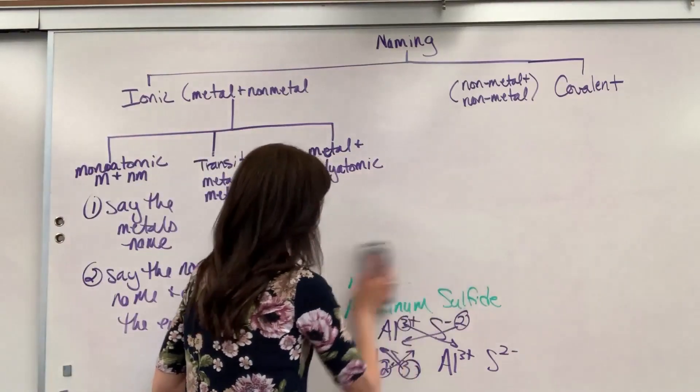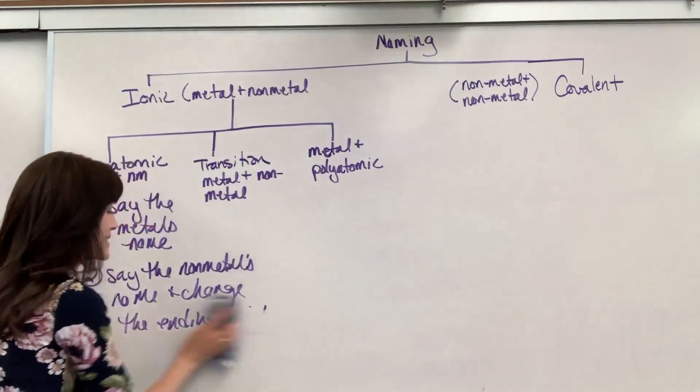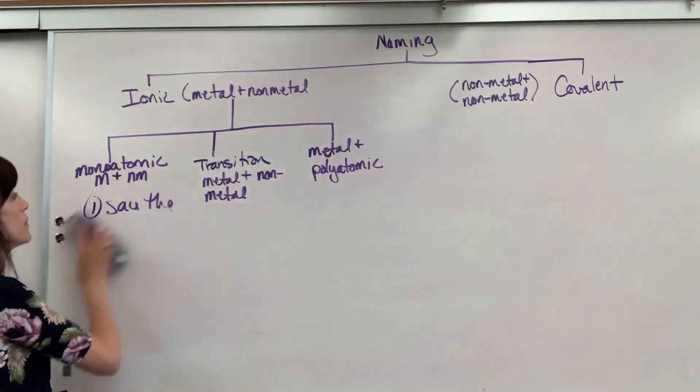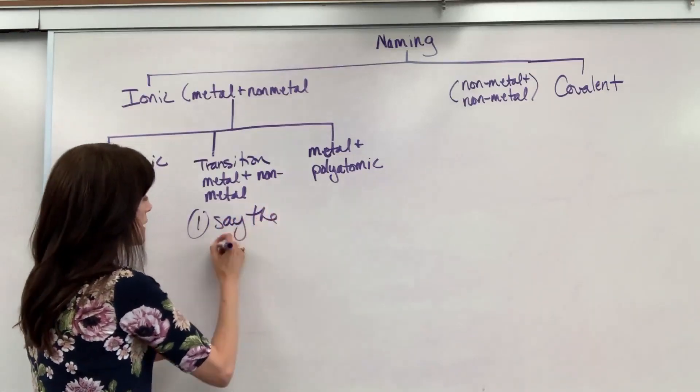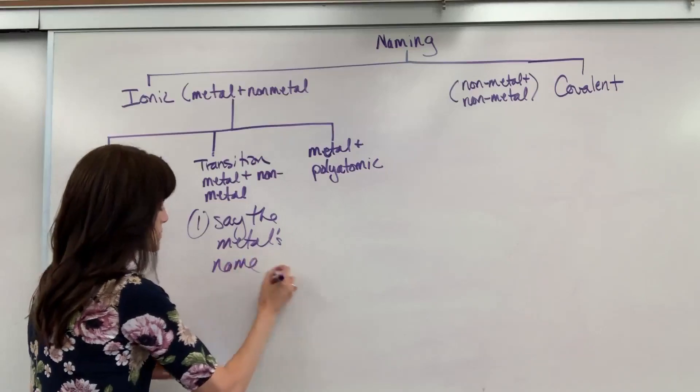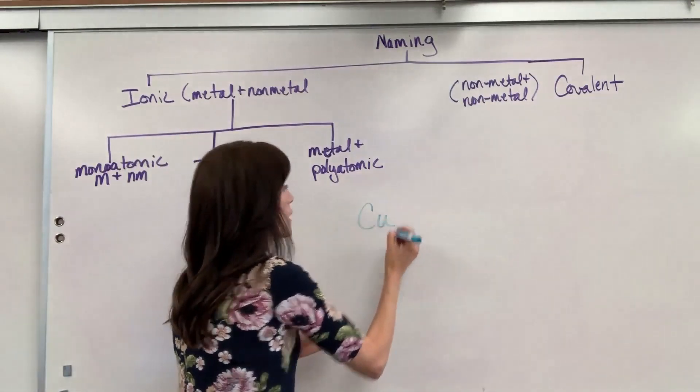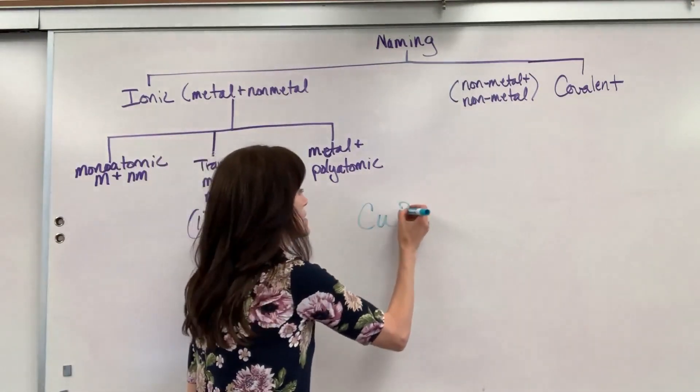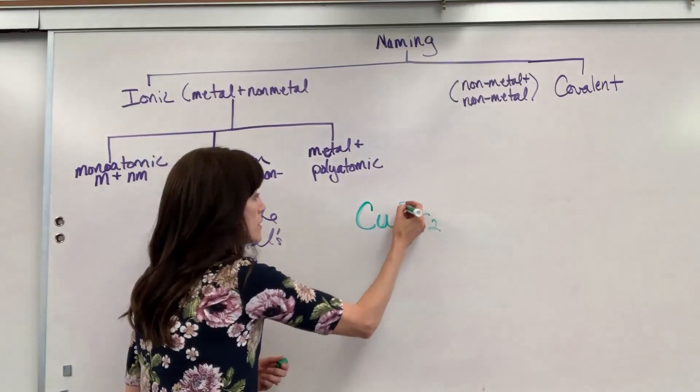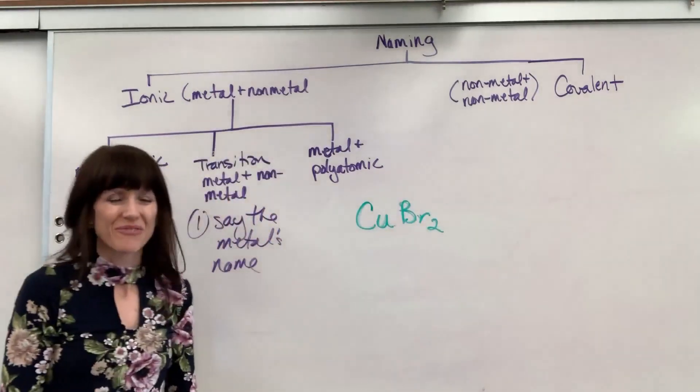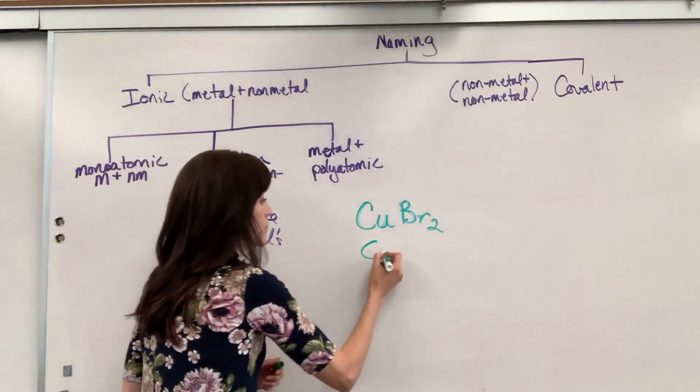Let's go to the second situation. This is if you have metals that are in the transition block, the d-block - transition metals. It begins the same. First thing you're going to do is say the metal's name. Let's do an example with this one too. This time we're going to use copper. Let's do bromine with it: CuBr2. Copper is a transition metal, so I'm going to do the first thing - say its name: copper.